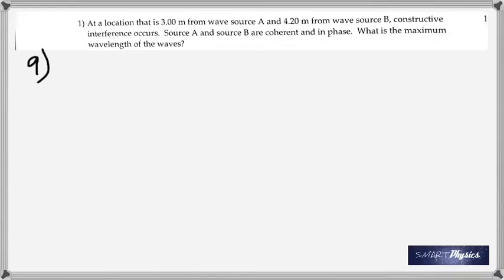Well, here are the answers to the quiz questions. Number one talks about a location that is three meters from wave source A and four point two meters from another source B. Constructive interference occurs. Sources A and B are coherent and in phase. What is the maximum wavelength of the waves? The word coherent means they both have the same wavelength, so they produce the same wavelength. But you can see that the location is three meters from one and four point two meters from the other.